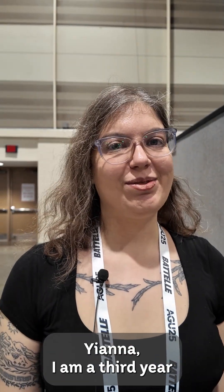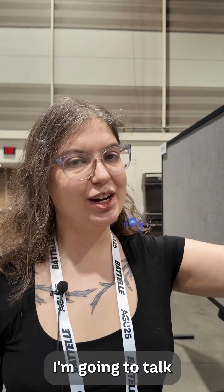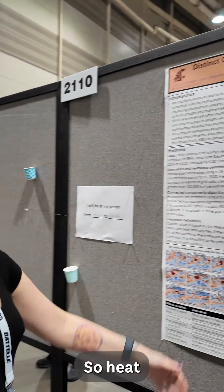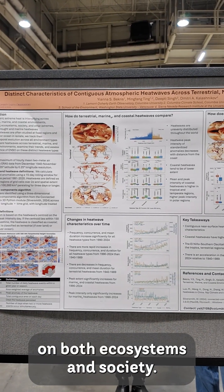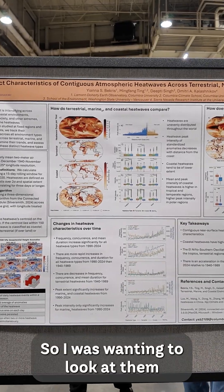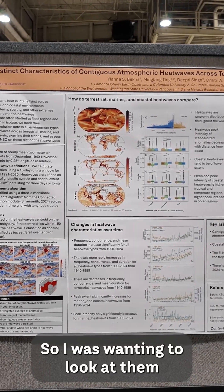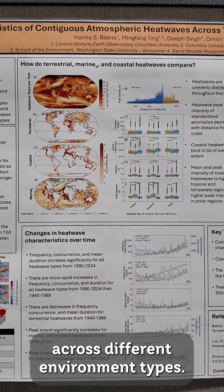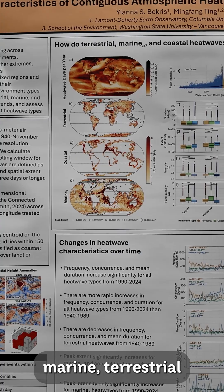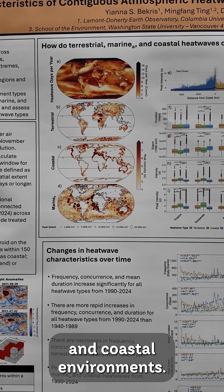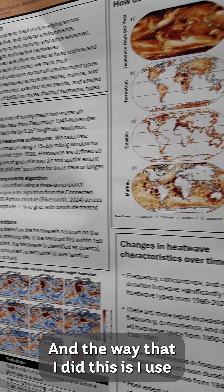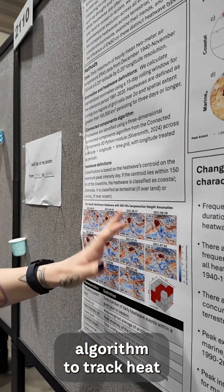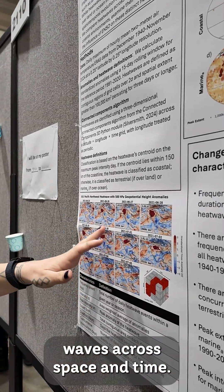Hi, I'm Jana. I'm a third year PhD student at Lamont, and today I'm going to talk about my work on heat waves. Heat waves can have negative impacts on both ecosystems and society, so I wanted to look at them across different environment types — marine, terrestrial, and coastal environments. I used a connected components algorithm to track heat waves across space and time.